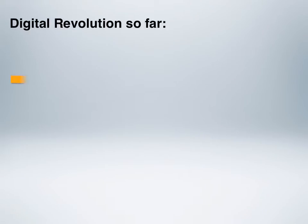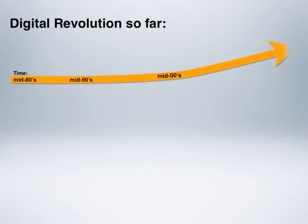A digital revolution so far. Here's a chart where we can explain a little bit about where we've come. On a timeline, we're talking from about the mid-1980s. It could be said that the digital revolution of technology really got underway, and we'll map a whole bunch of trends against this timeline.